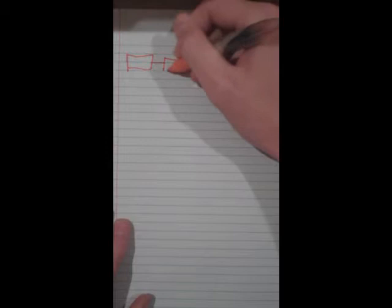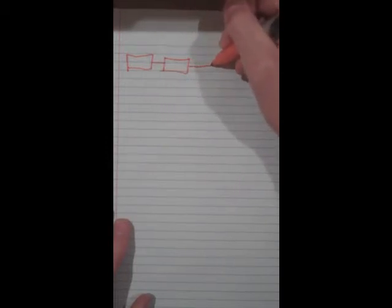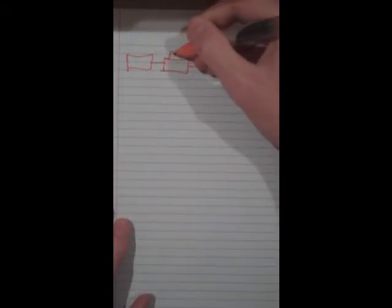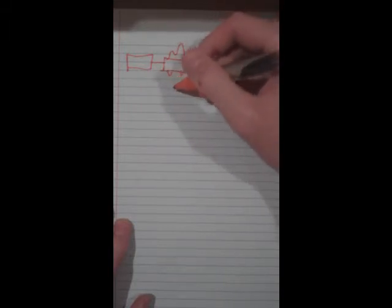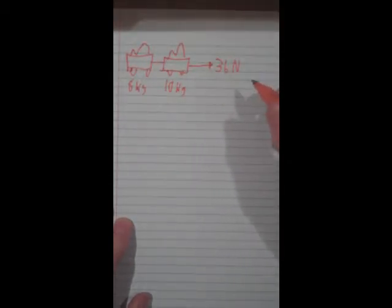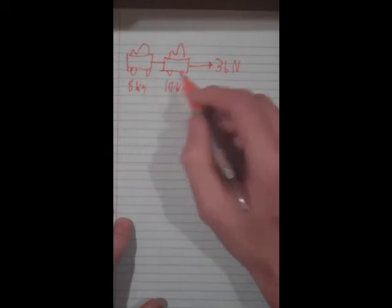So let's do a bit more complicated of a problem. Let's say we have kind of a train cart, and we are pulling this train cart with a force of 36 newtons. And this cart in all has a mass of 10 kilograms, and this cart and everything that it has has a mass of 8 kilograms. And we want to find the acceleration in each one of these carts.